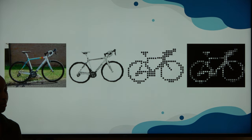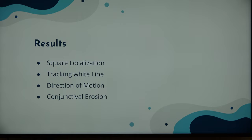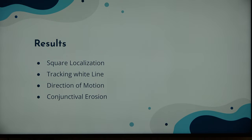Results. These results are taken from 30 patients who underwent this implantation. In all participants, there were improved visual tasks such as square localization — a square was moved across a black monitor and they could successfully track it — as well as tracking a white line across the monitor. Direction of motion was improved and all participants could walk along the sidewalk successfully. However, one downside was conjunctival erosion: some patients had scraping of the cornea, which can cause redness and ocular pain.